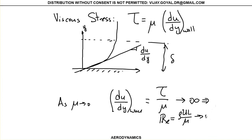If du/dy goes to infinity, that means basically all your flow is turbulent — you have an infinite Reynolds number. Mathematically, if mu approaches zero, tau goes to infinity, and Reynolds number also goes to infinity, where L is a fixed value (the body length). We can also write Reynolds number as rho × V squared divided by (mu × V / L), where the numerator represents inertia forces and the denominator represents viscous forces.